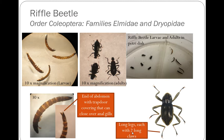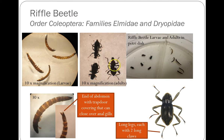Starting with the Riffle beetle, this is kind of what they look like in the petri dish. We have the adults over here and their larva over here. The adults are a small black beetle, very dark color. Their legs look like they are longer than they should be proportionally for their body.